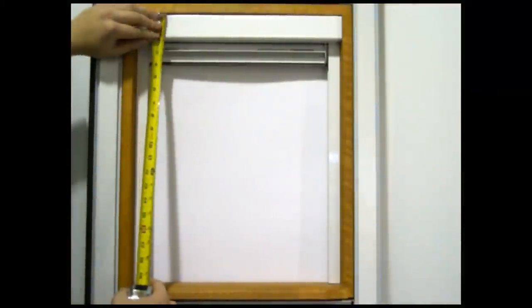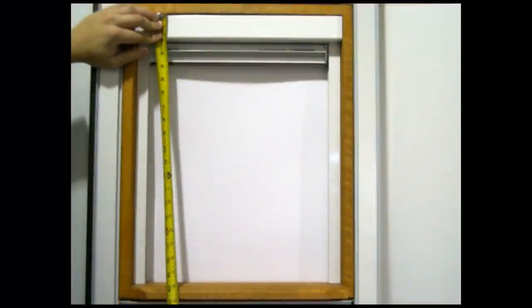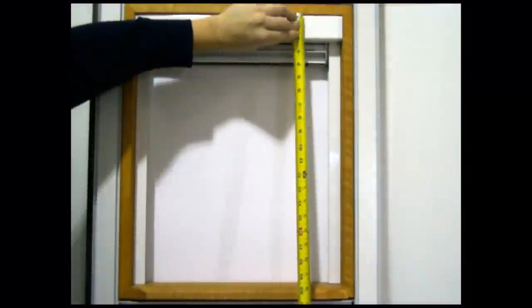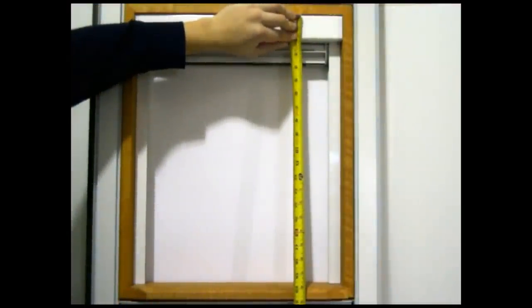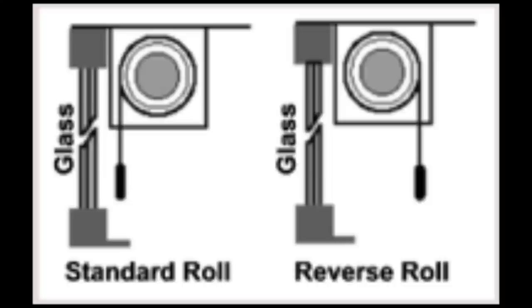Now take the vertical measurements. You can take two or three, and once again measure from the inside of the jamb to the inside of the jamb, and order with the smallest measurement to the nearest eighth of an inch.